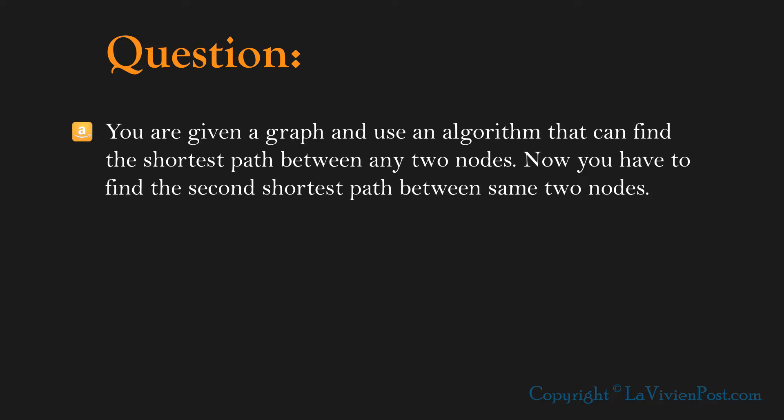Here is the question statement. You are given a graph and use an algorithm that can find the shortest path between any two nodes. Now you have to find the second shortest path between the same two nodes.